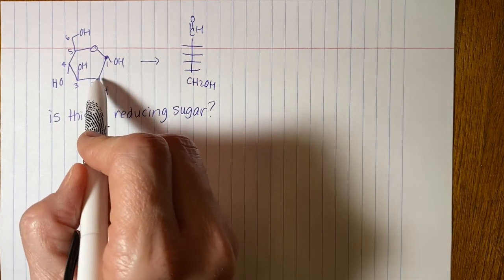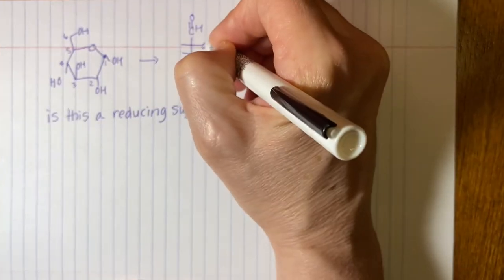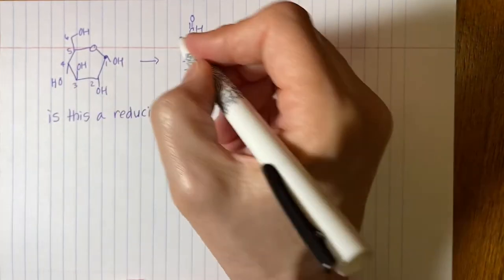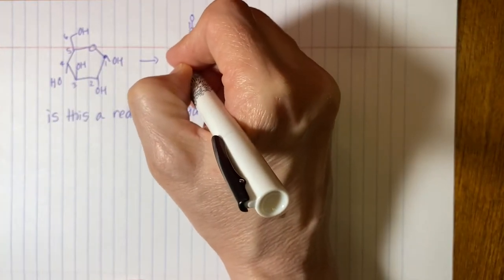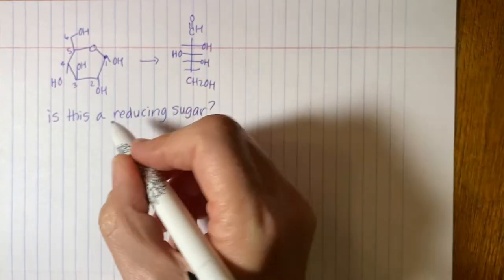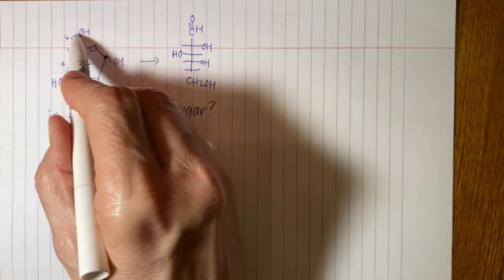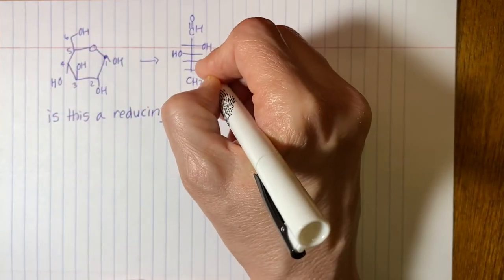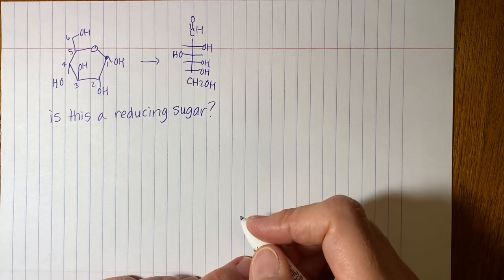So carbon 2 is this one. It's on the bottom, so it'll be on the right. Next one's on the top, so that will be on the left. Next one's on the bottom, so that will be on the right. And then it's a D sugar based on the carbon 6 sticking up, so it'll look like that. So that's our linear form.